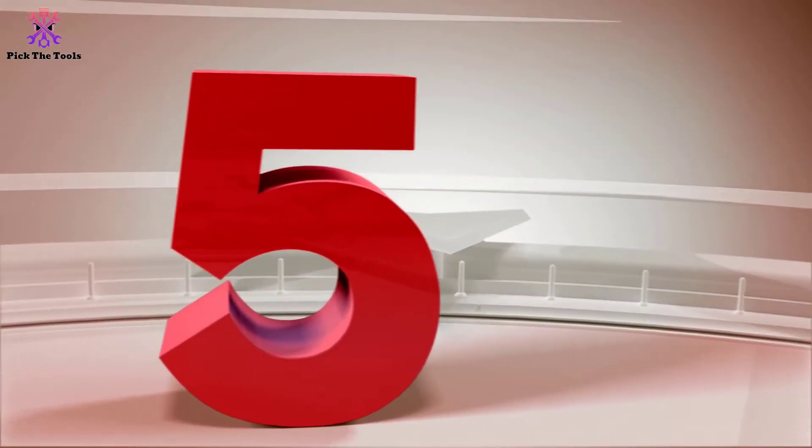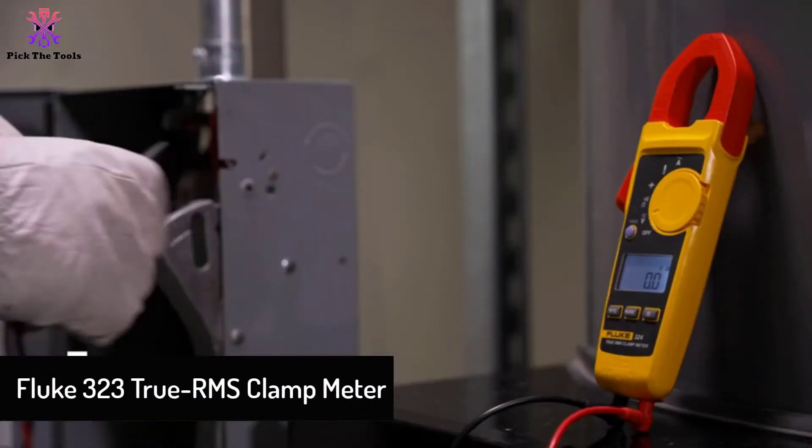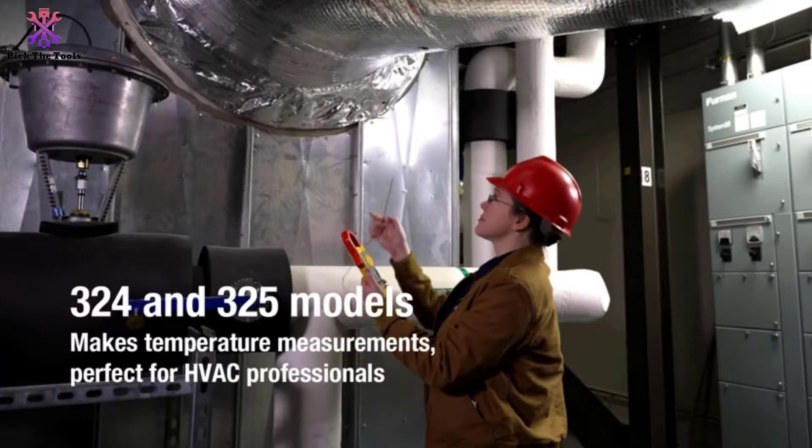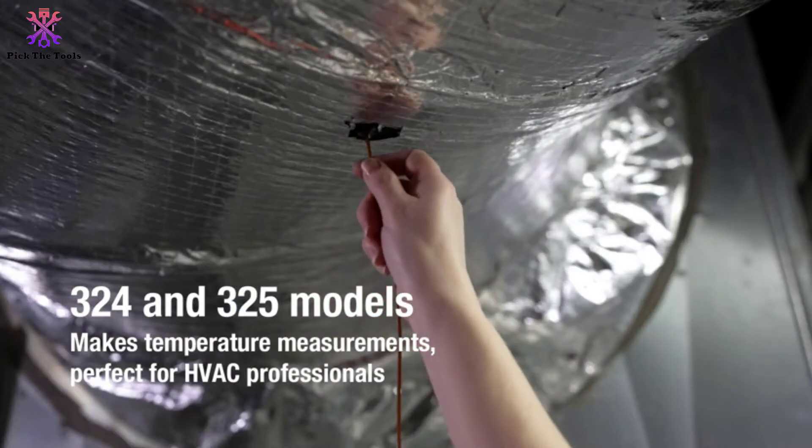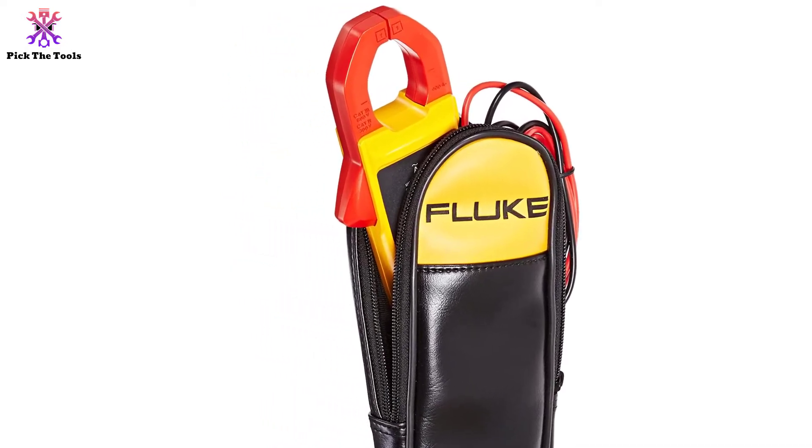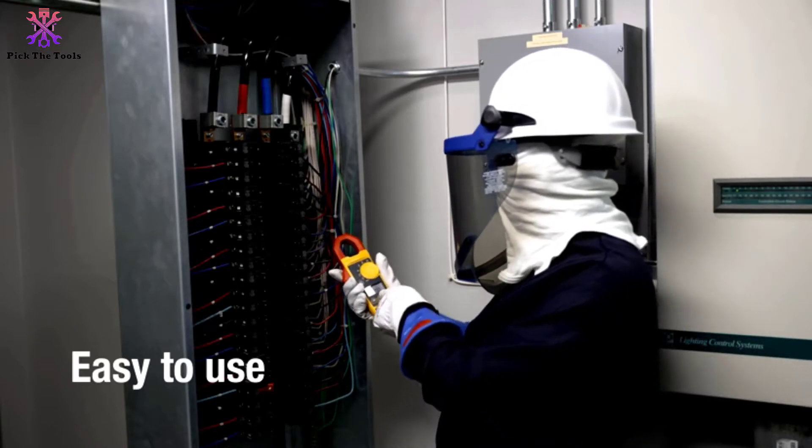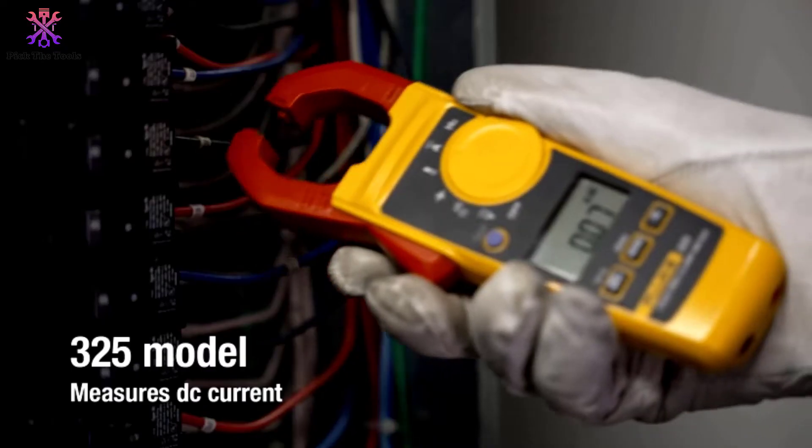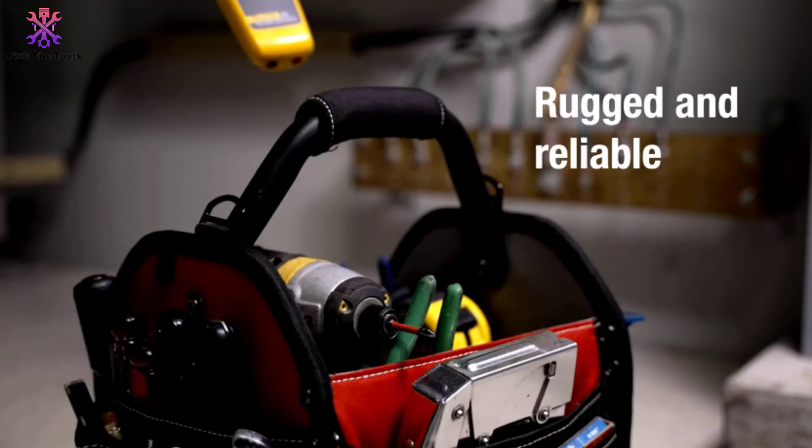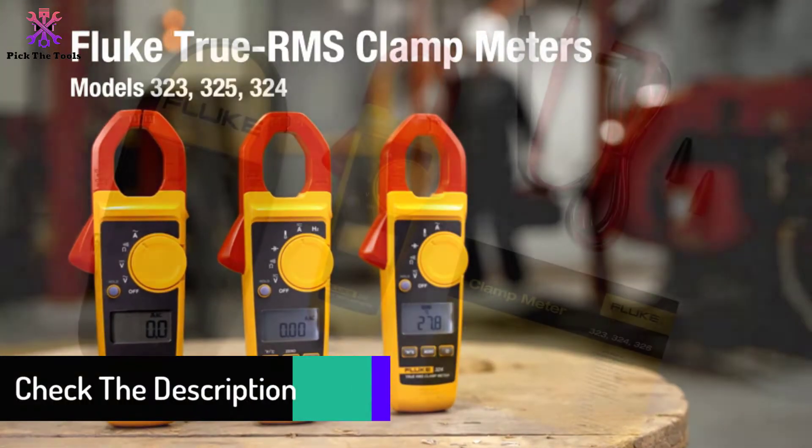Starting at number five, we have the Fluke 323 True RMS clamp meter. Fluke is one of the most respected brands on the market for electrical measurements. This Fluke 323 can provide reliable measures for amperage, voltage, and resistance. That's why it took the first place in our list. If you are searching for a reliable clamp meter to measure voltage and resistance of the current, you can't deny the Fluke 323 digital clamp meter. It provides accurate measures for both commercial and household electricians. Moreover, it has a reasonable size.